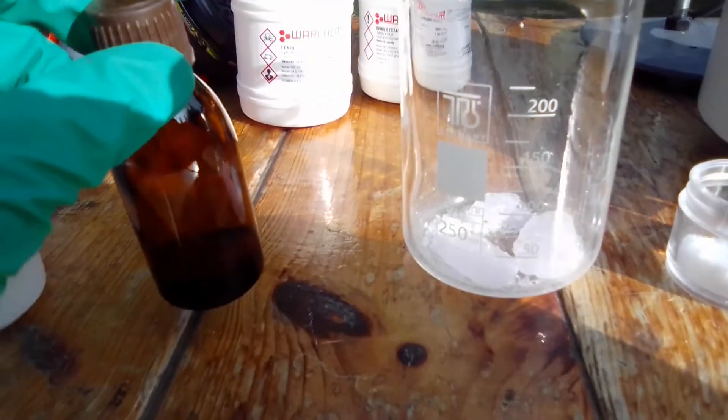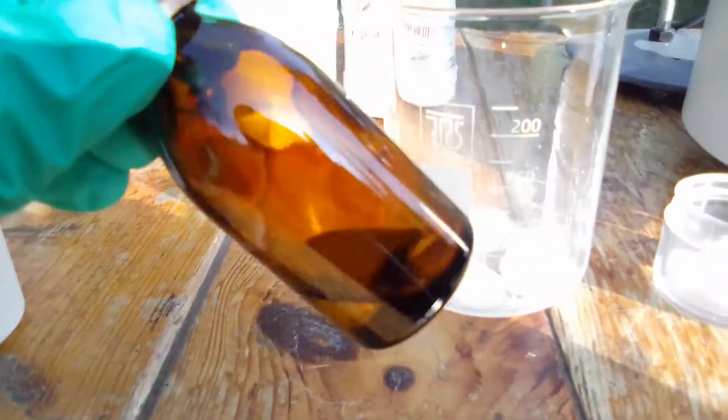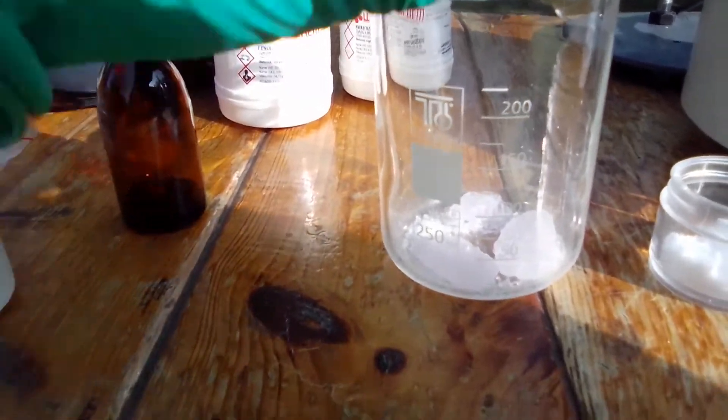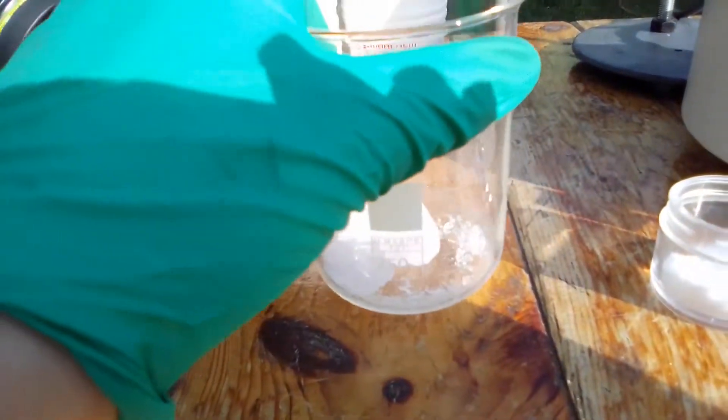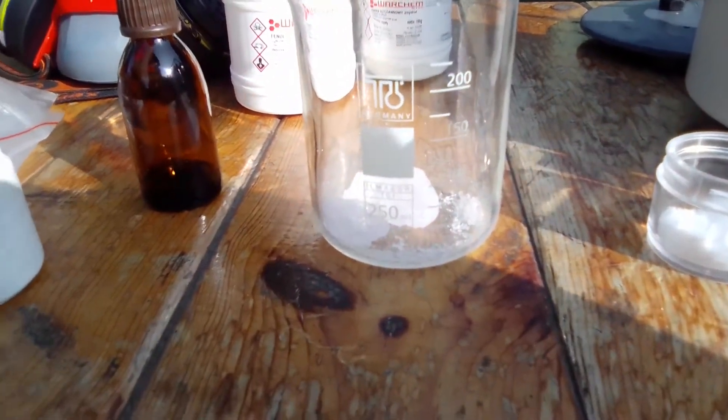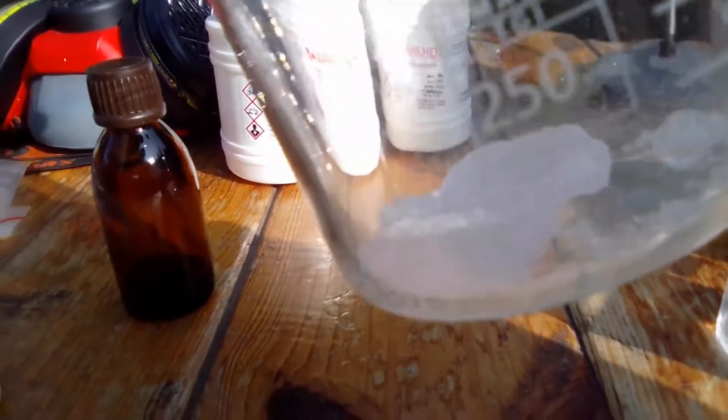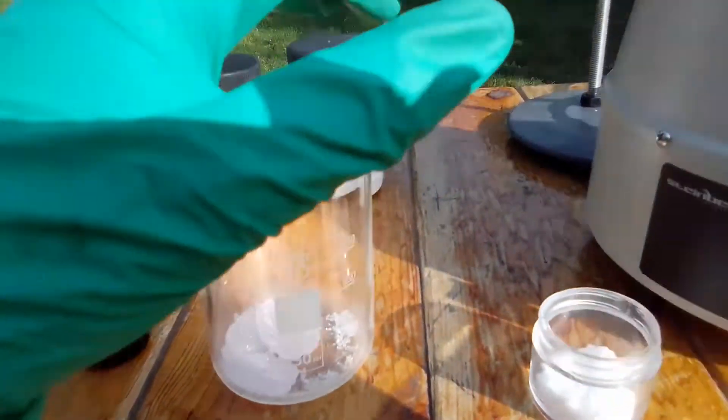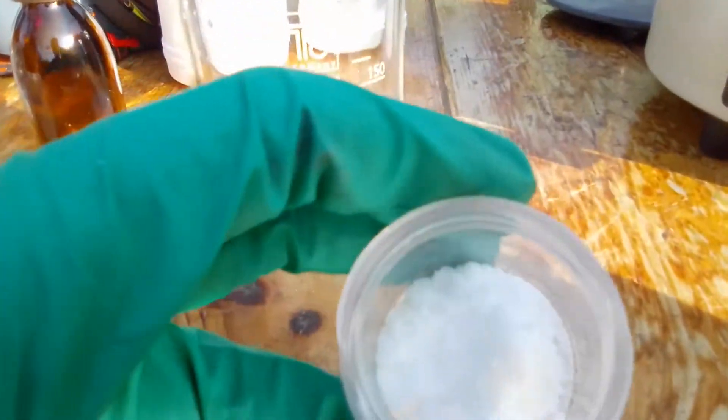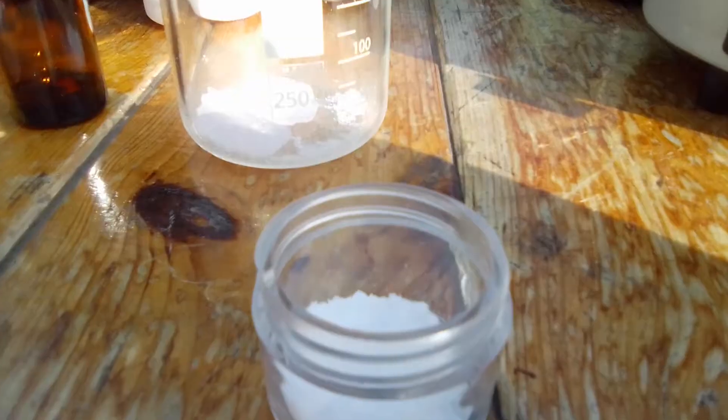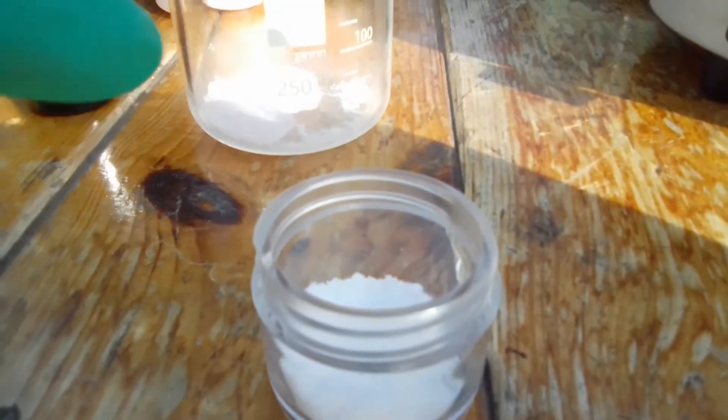For this we will need 7 grams of concentrated Sulfuric Acid, 9.59 grams of Phenol (mine is a little bit contaminated, it should be clear, not pink), and also 4.28 grams of Oxalic Acid dihydrate.